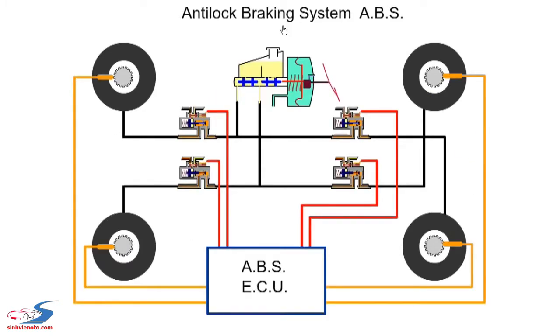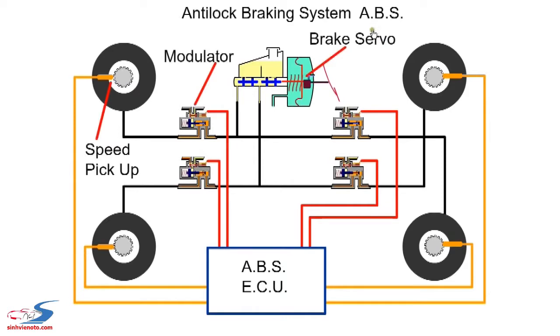A car has the optimum grip when the tyre is on the verge of sliding on the road surface. When the tyre is sliding, the grip is reduced dramatically. To prevent the wheel from sliding, an anti-lock braking system is used.